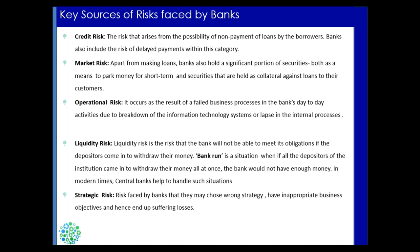Another major risk is operational risk. Banks have to operate every day, and any problem in their operations can result in operational risk. This can happen due to problems in IT systems, internal process breakdowns, or technology failures. For example, a bank receives multiple loan applications daily with a set process to evaluate them — if a technology failure prevents processing those applications, that is operational risk. Similarly, if officials do not follow required procedures or internal processes, that is also operational risk.